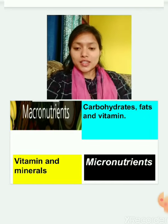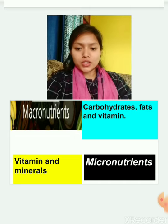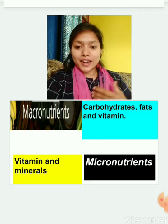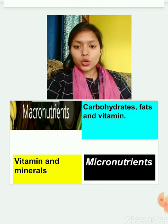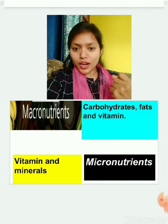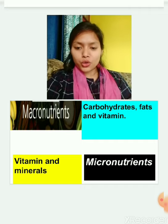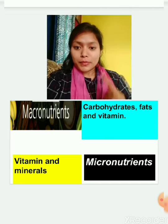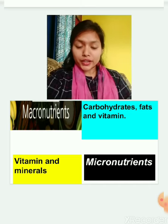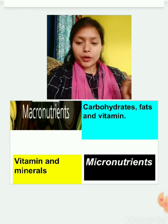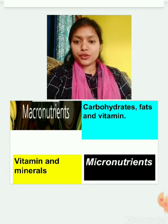Nutrients are mainly categorized into two parts. First is macronutrient and second is micronutrient. Macro means in large quantity, so nutrients required by our body in large quantity are macronutrients — carbohydrate, protein, and fat. Minerals and vitamins are called micronutrients and they are required by our body in small quantity. A small quantity of vitamins and minerals is enough for our body.